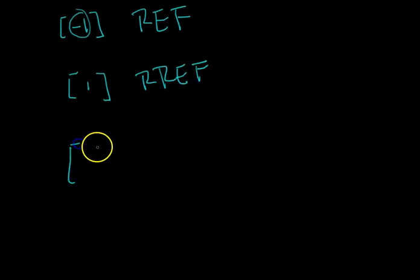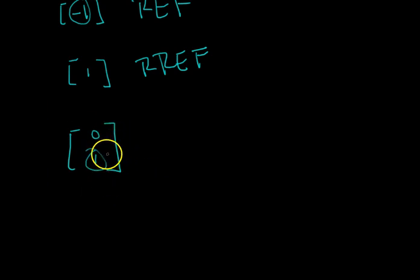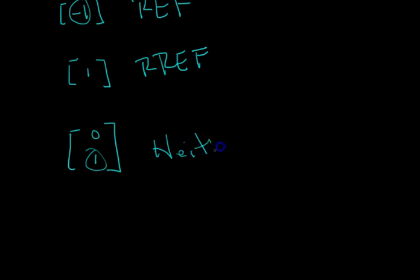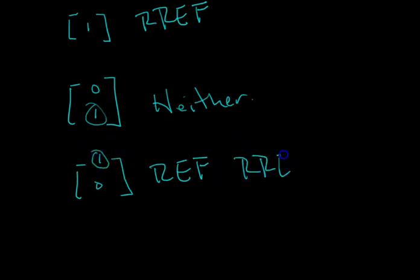Last challenge problem: a two-by-one matrix, which looks like a vector — and vectors are matrices. Identify your pivot. Are there zeros below it? Yes. Do they go top-left to bottom-right? Yes, there's only one. But it's the third criteria it doesn't meet: the row of all zeros has to be at the bottom. That single zero is still a row, and it's not at the very bottom, so this is neither REF nor RREF. If you wanted a similar matrix in row echelon form, you'd flip it so the zero is at the bottom. Then the pivot equals one with zeros above it, so it would also be in reduced row echelon form.